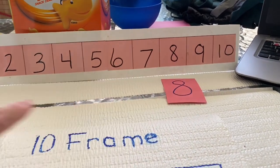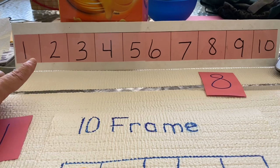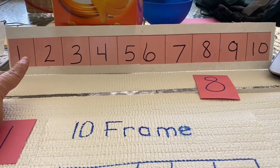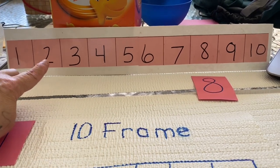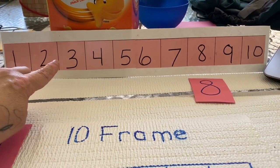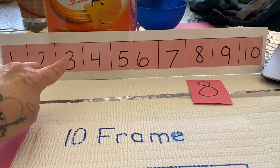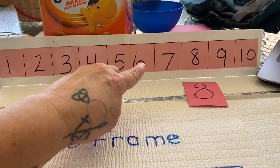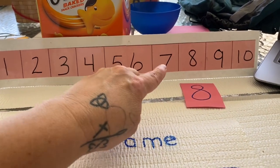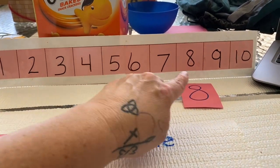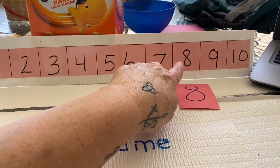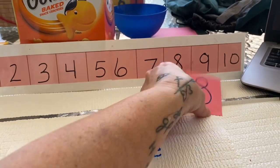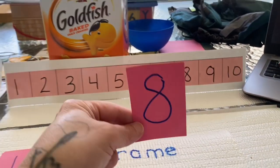That is the same number as this. And then I go back to the beginning and I begin counting: one, two, three, four, five, six, seven, eight. This is the number eight.